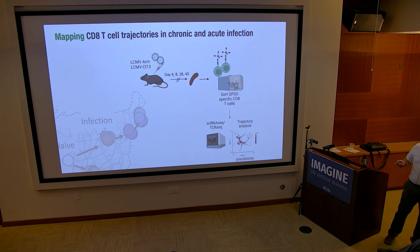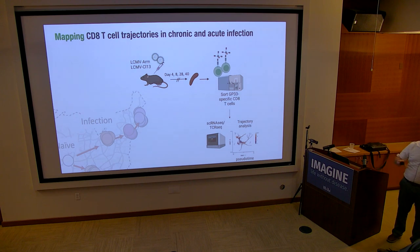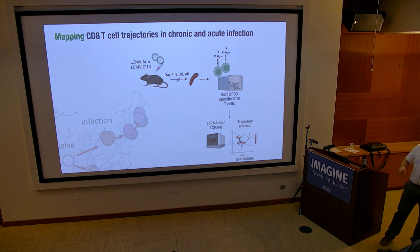Making the map was very helpful for interpreting the PerturbSeq data. We wanted to capture the most differentiation states that CD8 T cells could pursue in LCMV infection in the spleen. We took mice with LCMV Armstrong or clone 13 infection at day 4, day 8, day 28, and day 40 — covering a large swath of possible states. We sorted endogenous antigen-specific T cells from these time points using MHC class I tetramers, then did single-cell RNA-seq and TCR-seq, and put these together into one giant UMAP to understand where all the states were relative to each other.